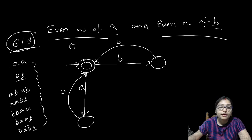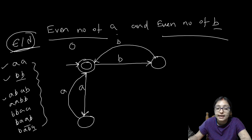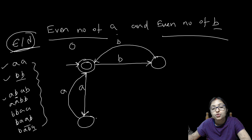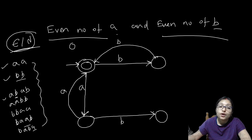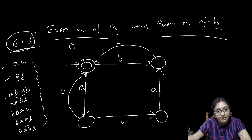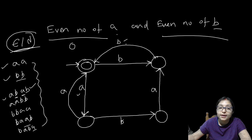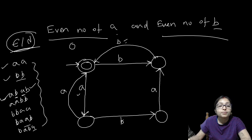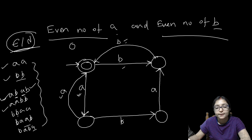So from here AABB is accepted. Now we have to think about another possibility. When first A comes, after that another B can come — that is a non-final state. But from here another A can also come. After this, if another B comes then ABAB will be accepted. AABB we have already done. BBAA is also already done.